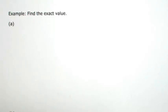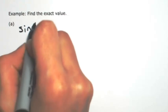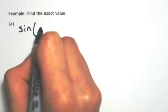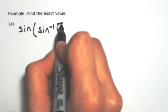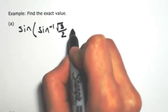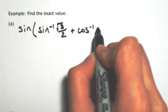Let's try some examples that incorporate our sum and difference formulas for sine and cosine along with inverses. So for this first example, let's say we have the sine of the inverse sine of square root of 3 over 2 plus inverse cosine of 1.